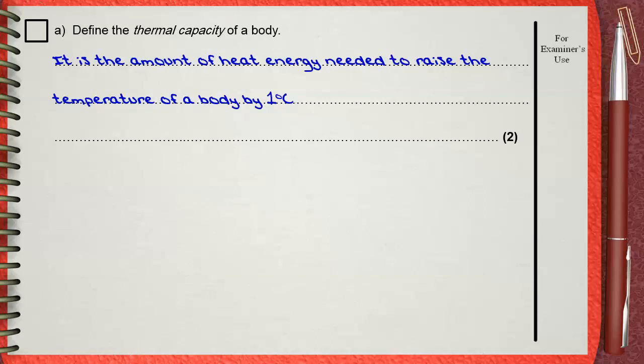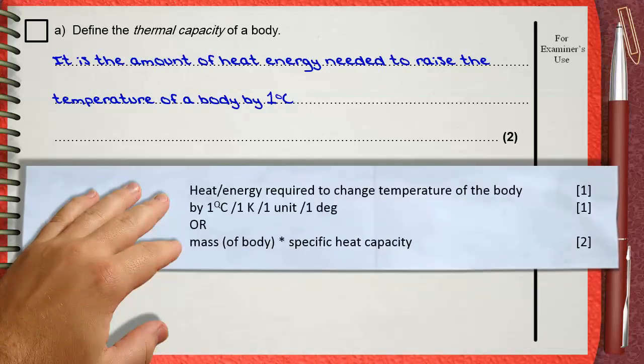The mark scheme gives two marks for this. You can say 'heat or energy required to change the temperature of a body' — that's one mark. 'By 1 degree Celsius' — you can say 1 Kelvin, 1 unit, or 1 degree. Or you can state the other equation for thermal capacity: mass of the body multiplied by the specific heat capacity. That gets you both marks.